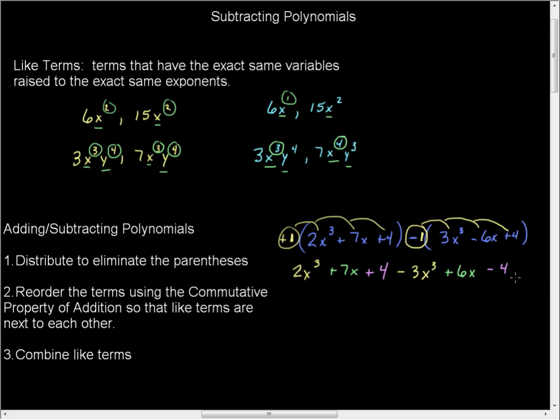So now, using this example here, I'm going to reorder the terms using the commutative property so that the like terms are next to one another. When I do that, I gather up the term with its sign in front.